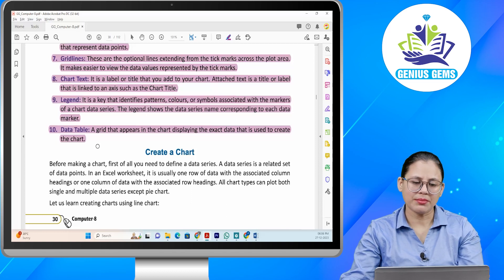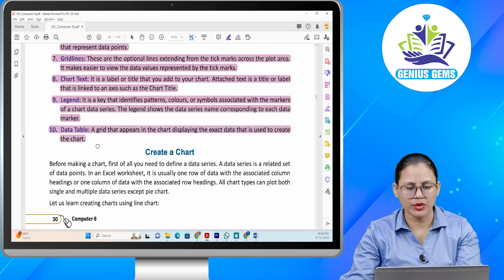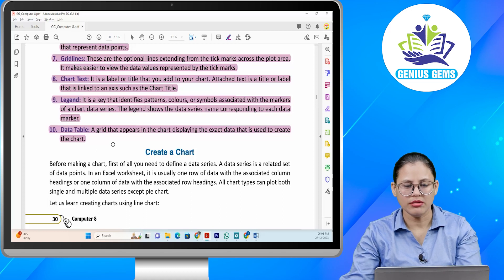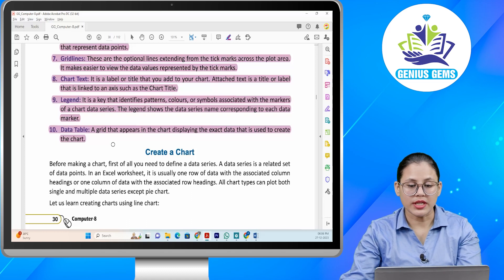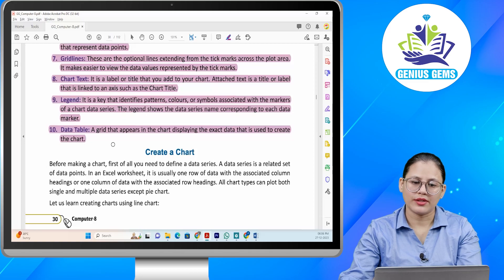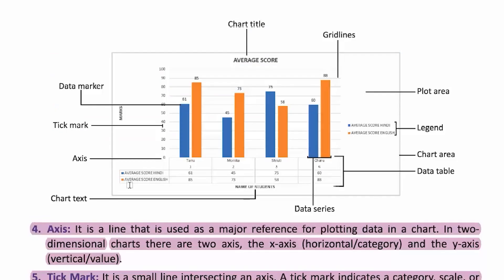Number ten: Data table. A grid that appears in the chart displaying the exact data that is used to create the chart. Data table aapka grid hota hai jo aapke chart mein appear hota hai, jo ki exact data ko display karta hai jisko hum chart create karne ke liye use karte hain. Aapko yahan pe diya gaya hai — ye aapke baars hain, aur dekhiye kis tarah se aapke paas elements hain aapke chart ki.